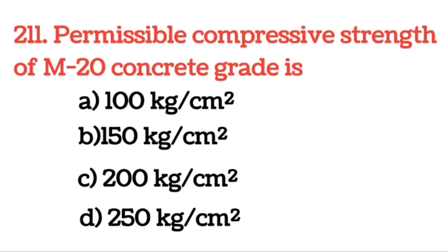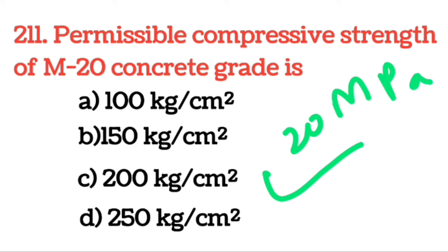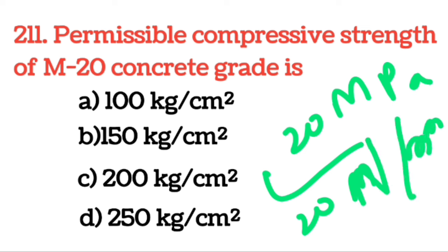Question: The permissible compressive strength of M20 concrete grade is? Answer: 200 kg per cm². M20 grade of concrete का permissible compressive strength 200 kg per cm² होता है। इसको आप 20 MPa भी बोल सकते हैं।